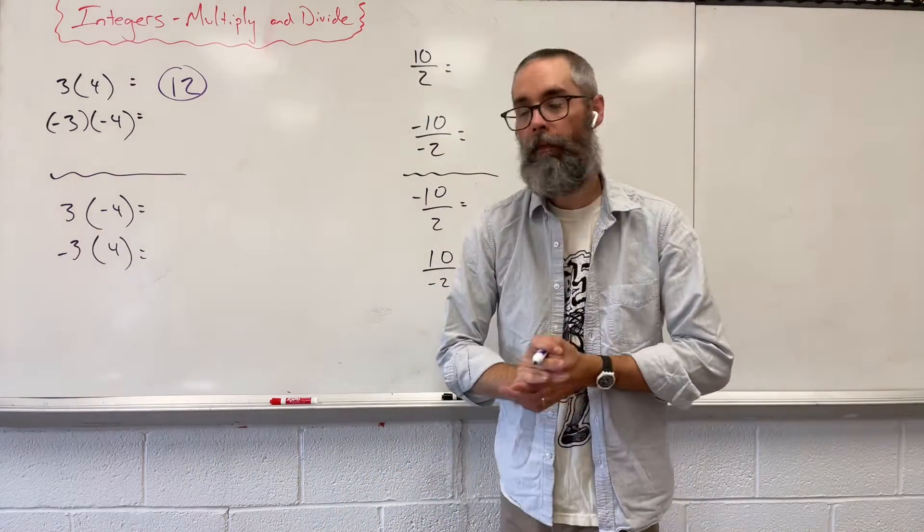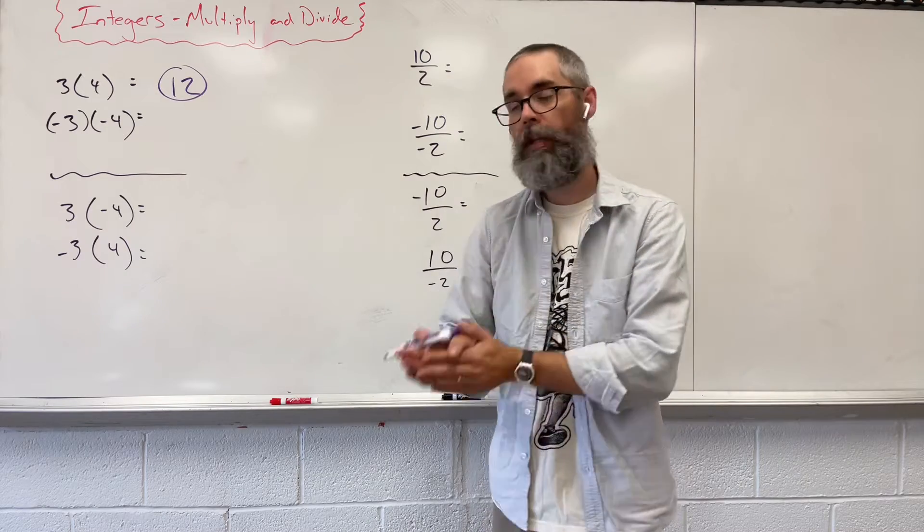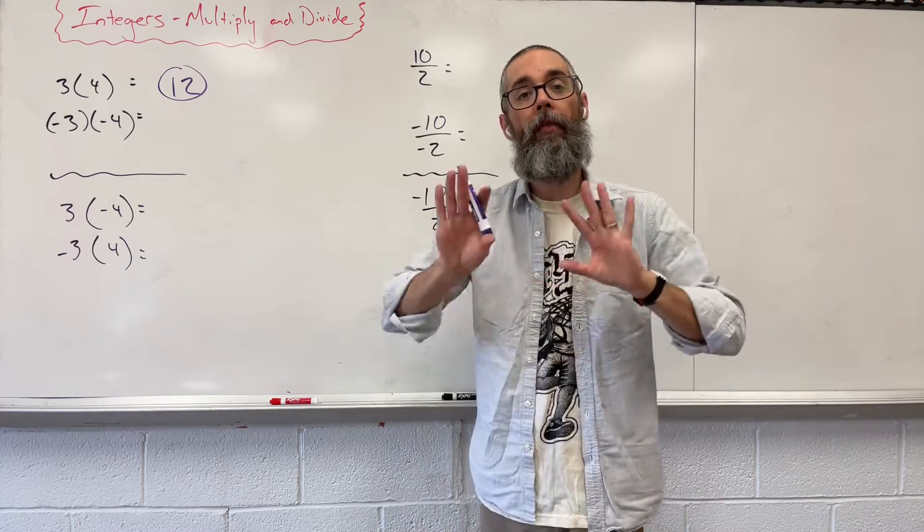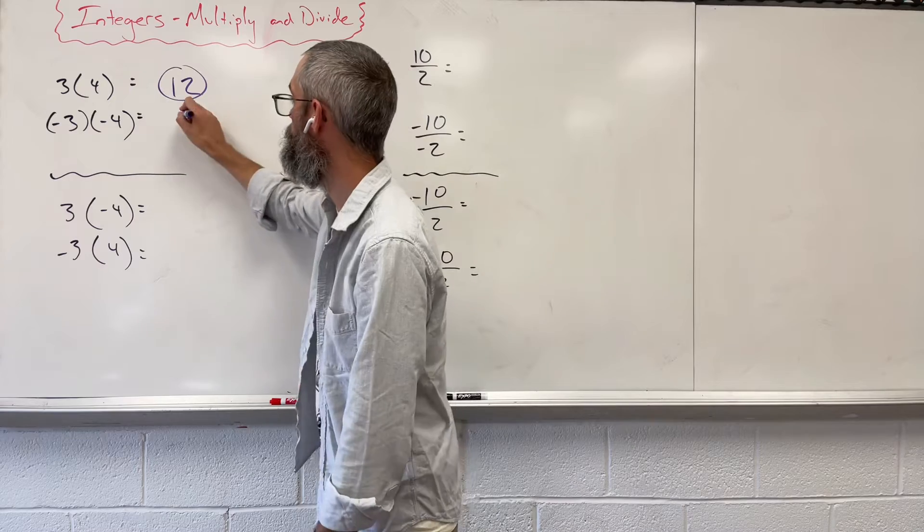Okay, when you have the next one, negative 3 times negative 4. First, let's just look at 3 and 4. That gives us 12.